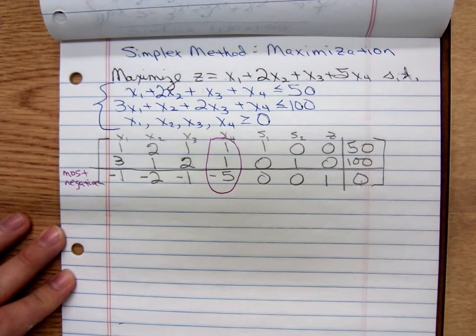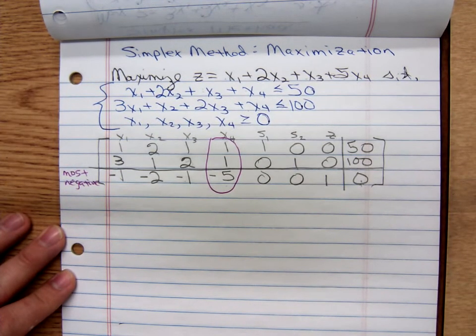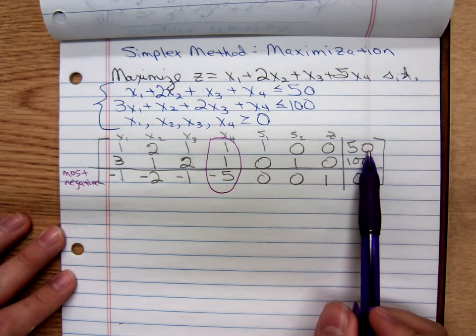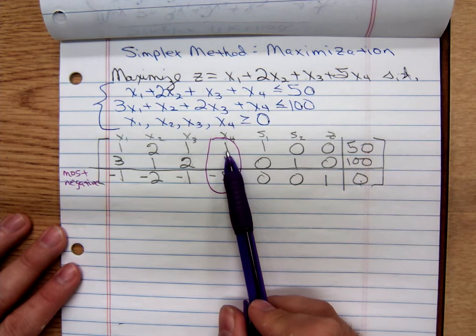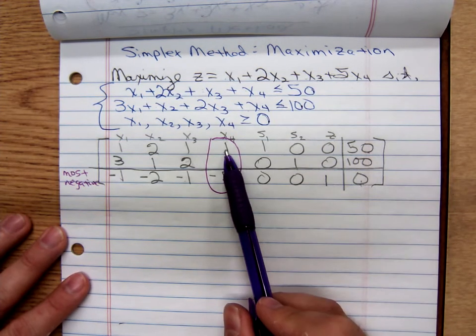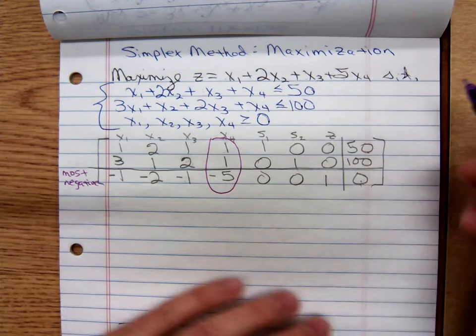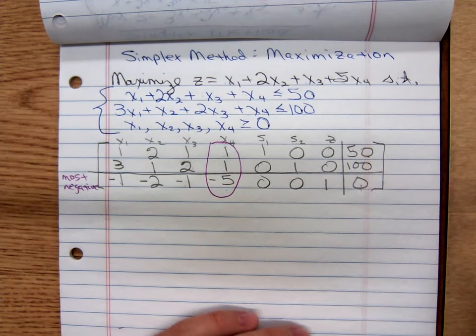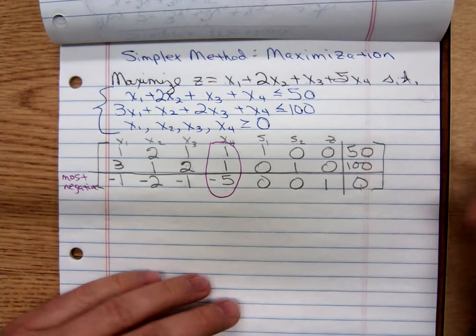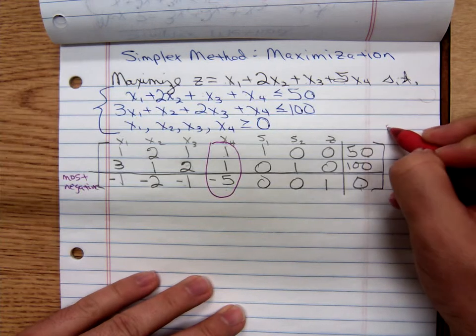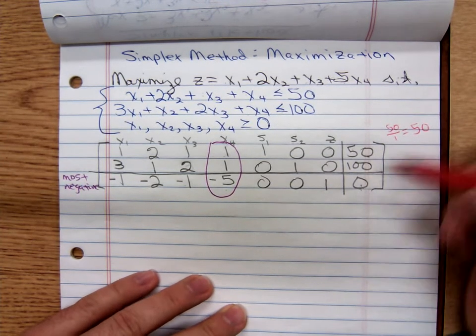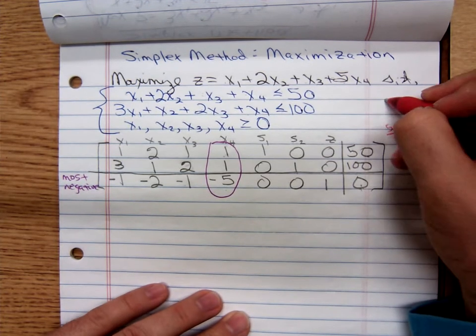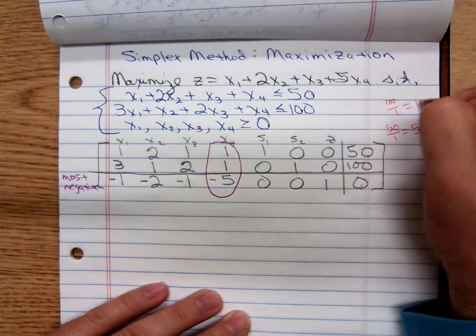That determines our pivot column. Then we determine our pivot row. To determine the pivot row, you take the column, the number in the column of constants, divide it by the number in the pivot column. So 50 divided by 1 is 50. So, let's see. I better write it here. We have 50 divided by 1, which is 50. And we have 100 divided by 1, which is 100.